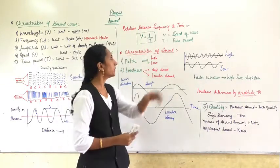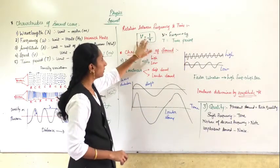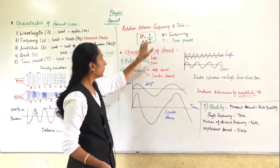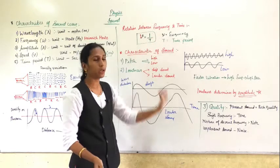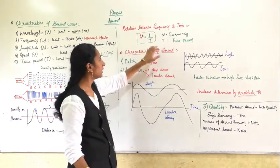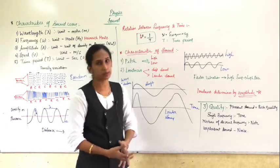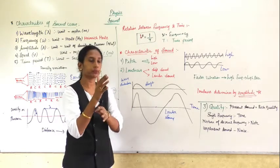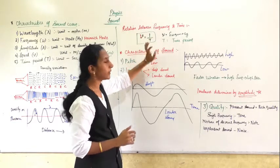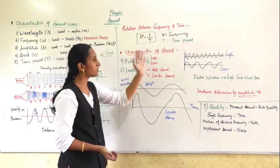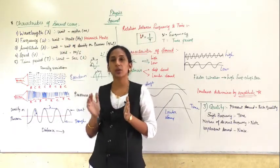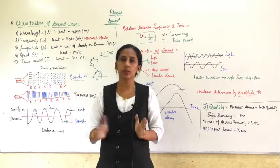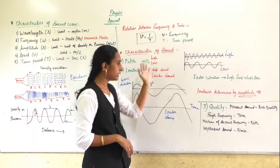Now, the relation between frequency and time period: nu equals 1 divided by T, meaning frequency equals 1 divided by time period — they are inversely related. If 5 waves are given and you want the time for 1 wave, it is 1 divided by 5. Do not confuse the characteristics of sound waves — which has these five characteristics — with the characteristics of sound, which has three: pitch, loudness, and quality.